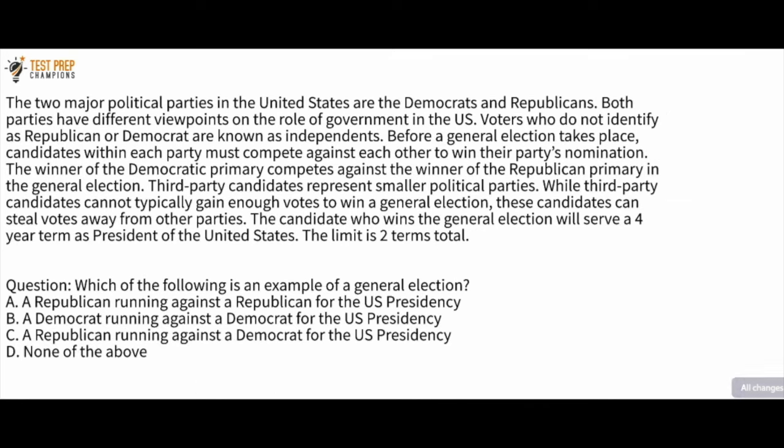The next question says: which of the following is an example of a general election? A. A Republican running against a Democrat for the U.S. Presidency. B. A Democrat running against a Democrat for the U.S. Presidency. C. A Republican running against a Democrat for the U.S. Presidency. Or D. None of the above. Pause the video, try to figure this out, and then when you're ready we'll go over the answer.